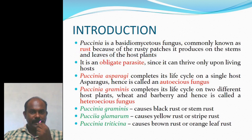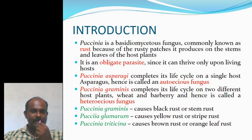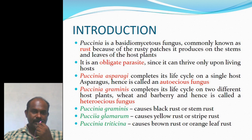Puccinia is a Basidiomycetes fungus commonly known as rust because of the rusty patches it produces on the stems and leaves of host plants. It is an obligate parasite since it can thrive only upon living hosts. Puccinia asparagi completes its life cycle on a single host called Asparagus, hence it is called an autoecious fungus.